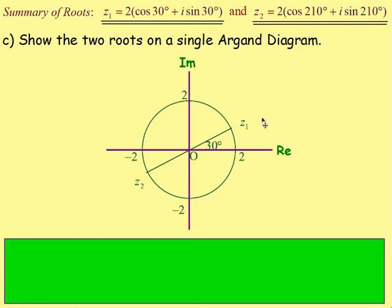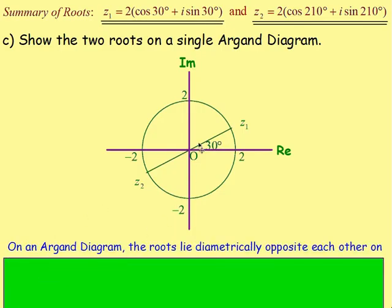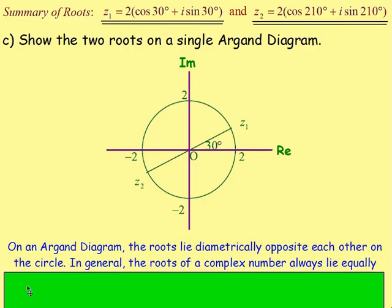For the second root, 2(cos210 + i·sin210): from the origin, go around 210 degrees at a distance of 2. What you notice about both roots is that they are evenly spaced — the roots lie diametrically opposite each other on the circle with radius 2.